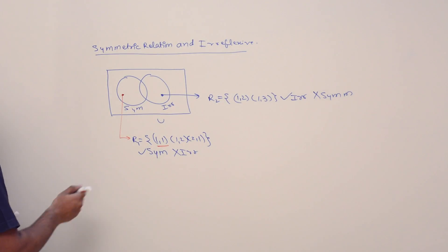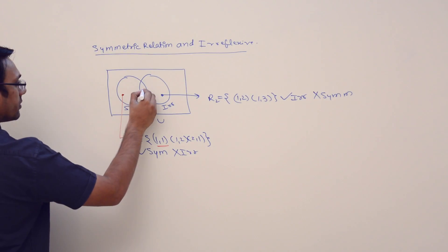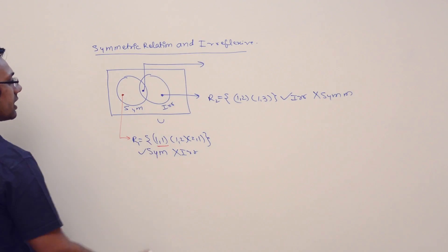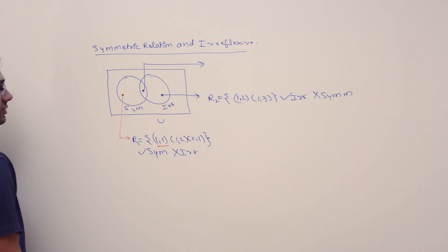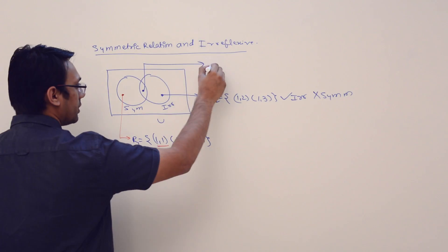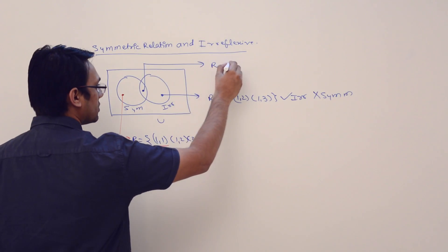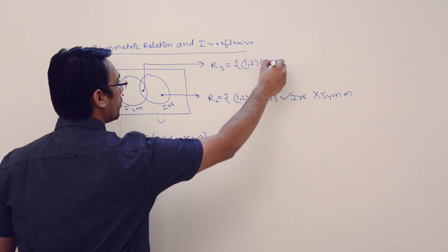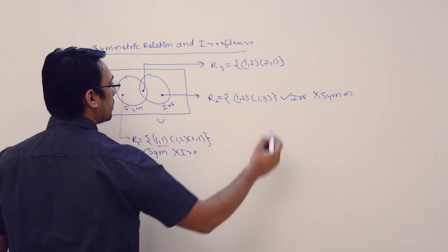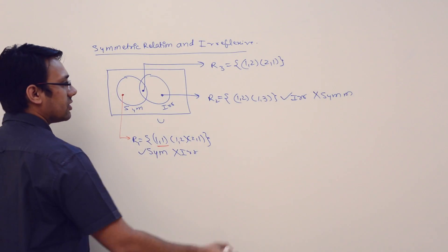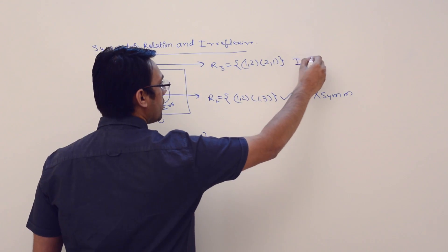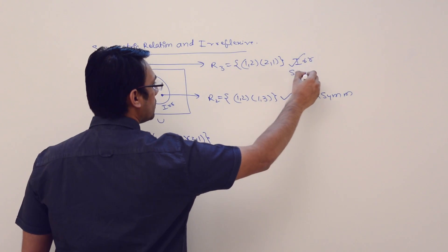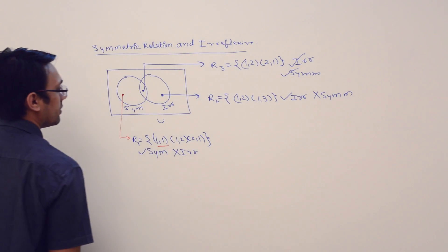Now can I give an example of a relation which is symmetric as well as irreflexive? Consider R3 = {(1,2), (2,1)}. This relation is irreflexive as well as symmetric.